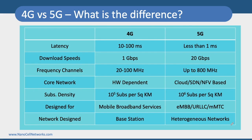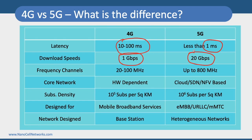In 4G, latencies were like 10 to 100 milliseconds, and now in 5G we are expecting latencies in the range of 1 millisecond. At the same time, we had 1 Gbps data rates in 4G, and now we are going to have 20 Gbps data rates in 5G. So our latency has reduced 10 times and our data rates have gone up by 20 times.